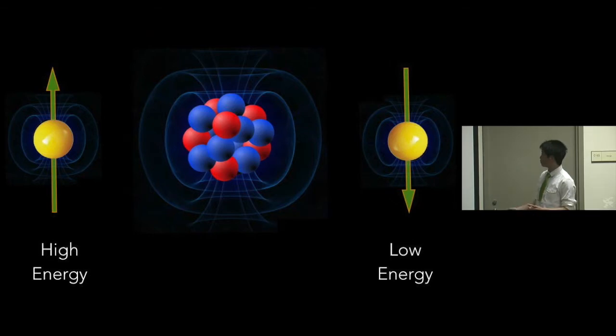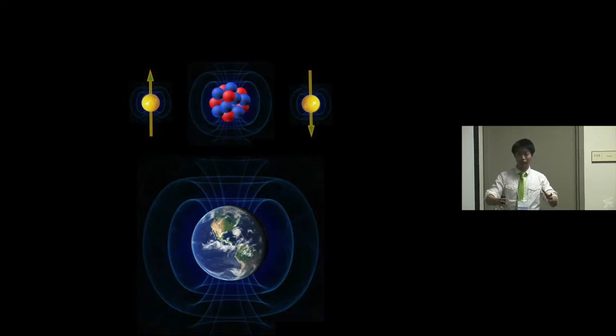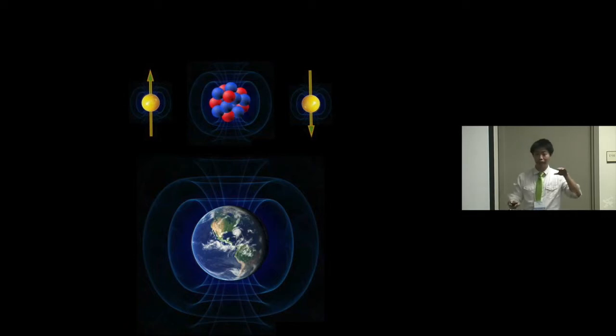We have to add one more thing. This molecule lives on Earth, and this Earth will add its magnetic field to the magnetic field of the nucleus. So one electron that was already at a high energy moves to an even higher energy. And the electron that was at a lower energy moves to a lower energy in this horizontal orientation. And what you get is that these electrons have a large energy difference.